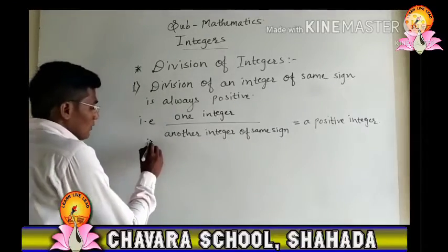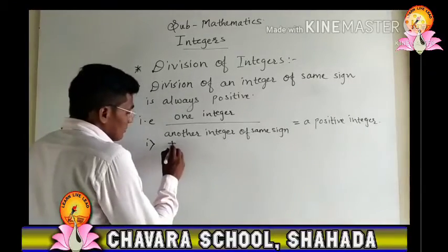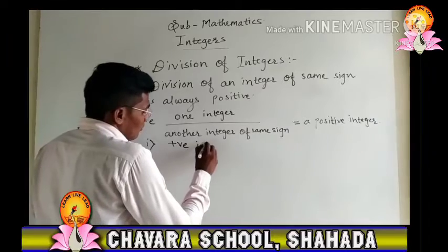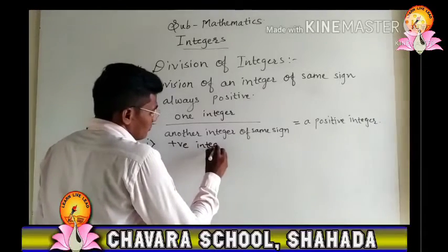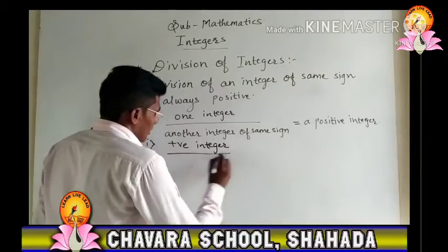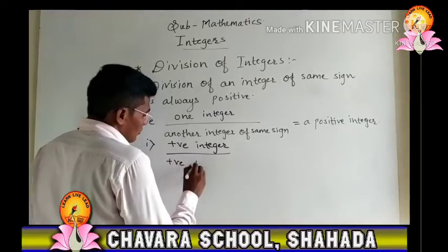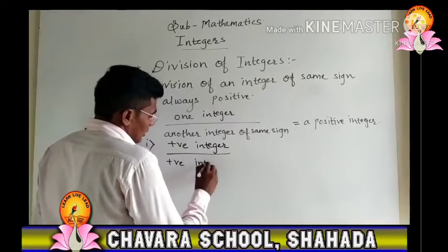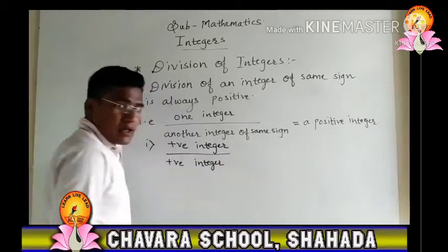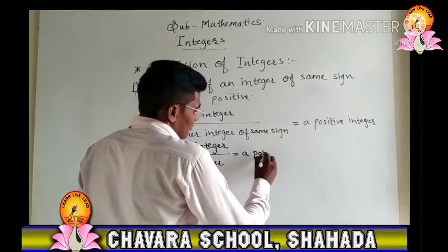The first type is where both integers are positive. Positive integer divided by positive integer — the answer we get is always a positive integer.